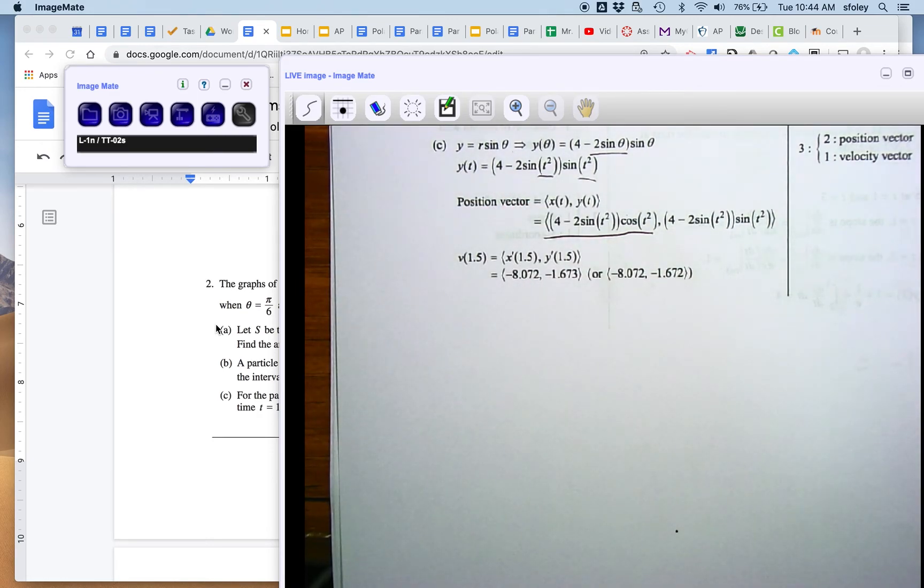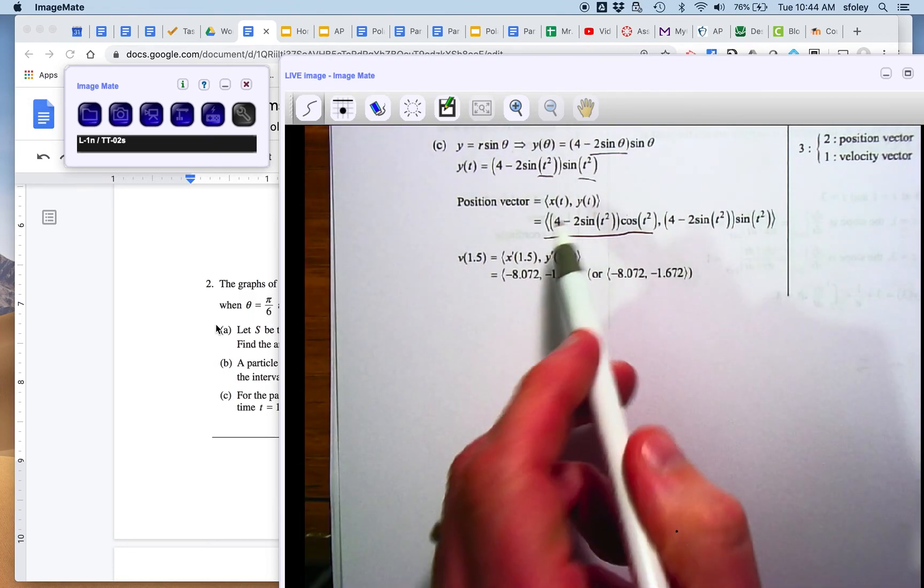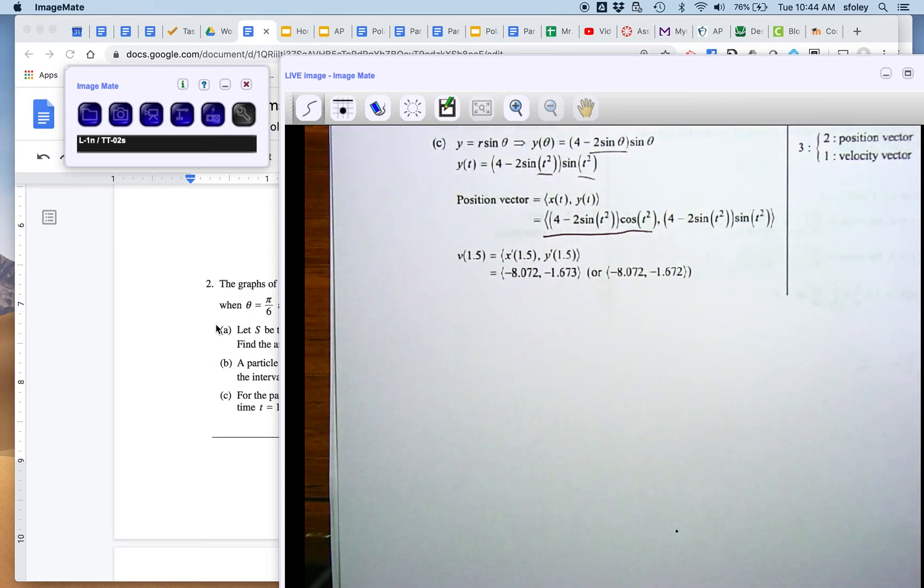And then once we have position, we find velocity by doing the derivative of each component. And of course, again, don't forget about n-deriv. You can certainly do these derivatives by hand, but if they're a big mess with the product rule and the chain rule, just do n-deriv for each component. Plug 1.5 into that derivative on your calculator, and you get that velocity vector, both the x and y components.